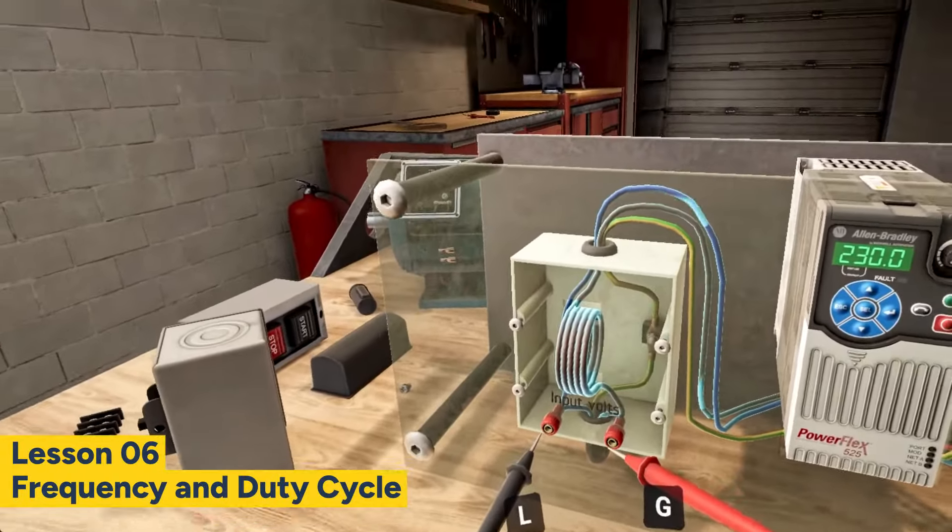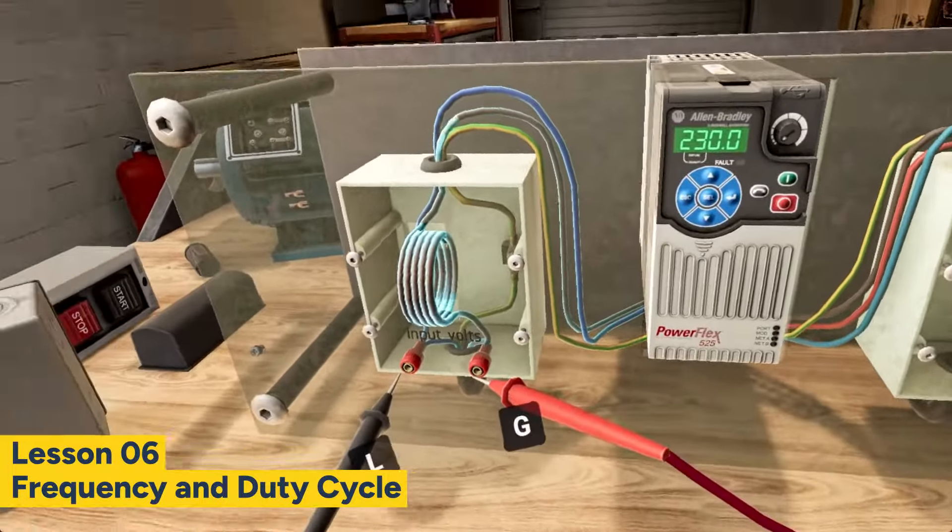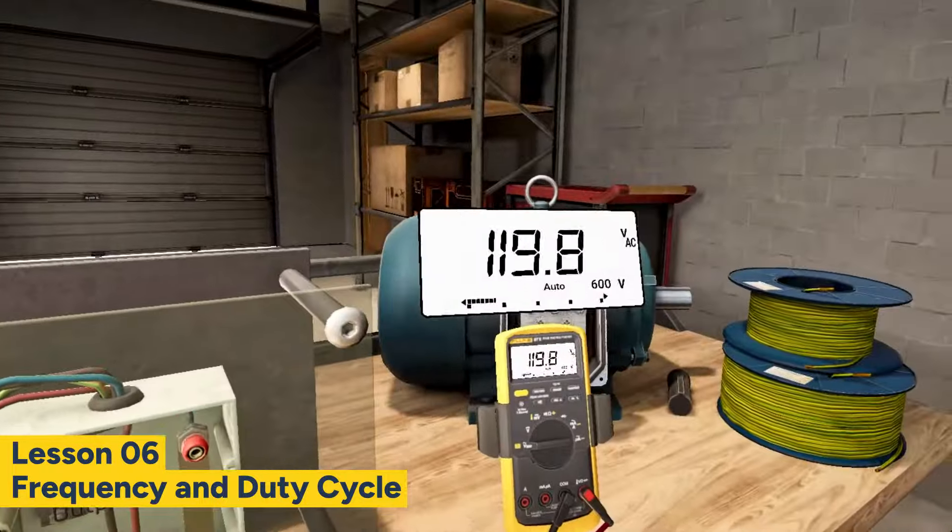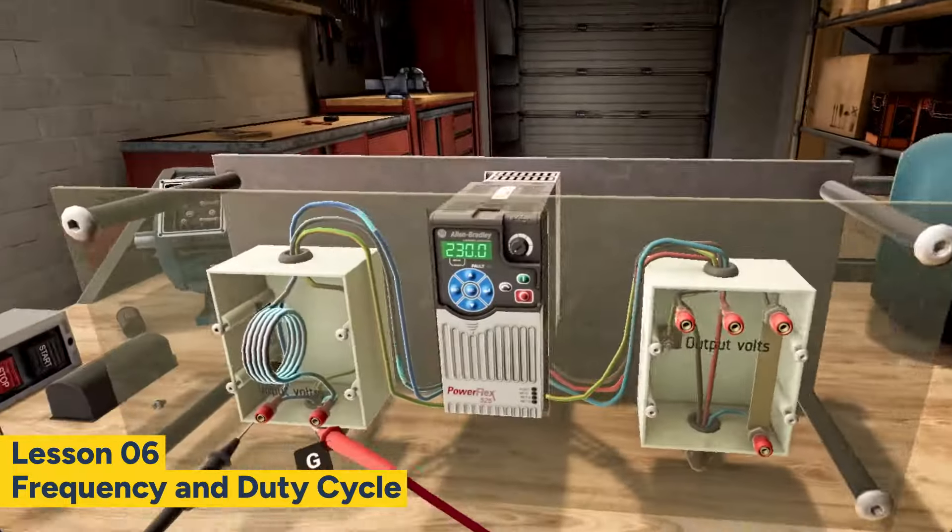Observe the reading on the display. As you can see, the input voltage going into the VFD is 120 volts. A VFD operates on single-phase input power and converts it into three-phase output power to run an induction motor.